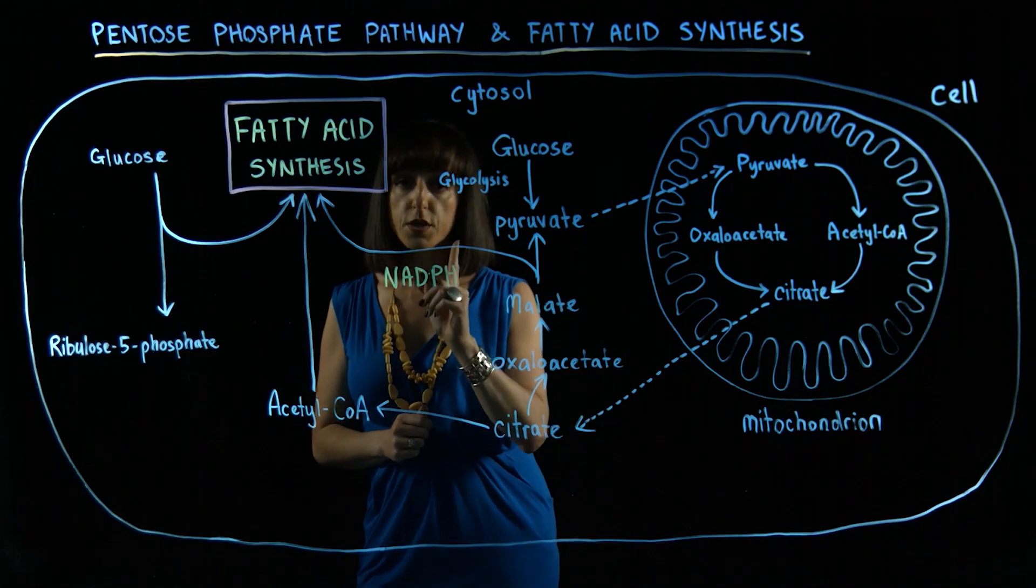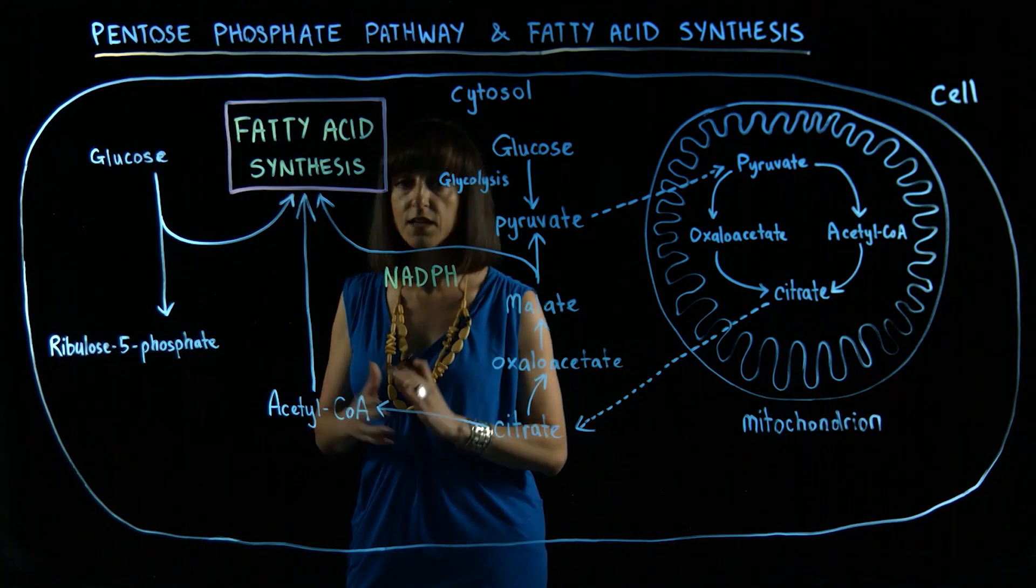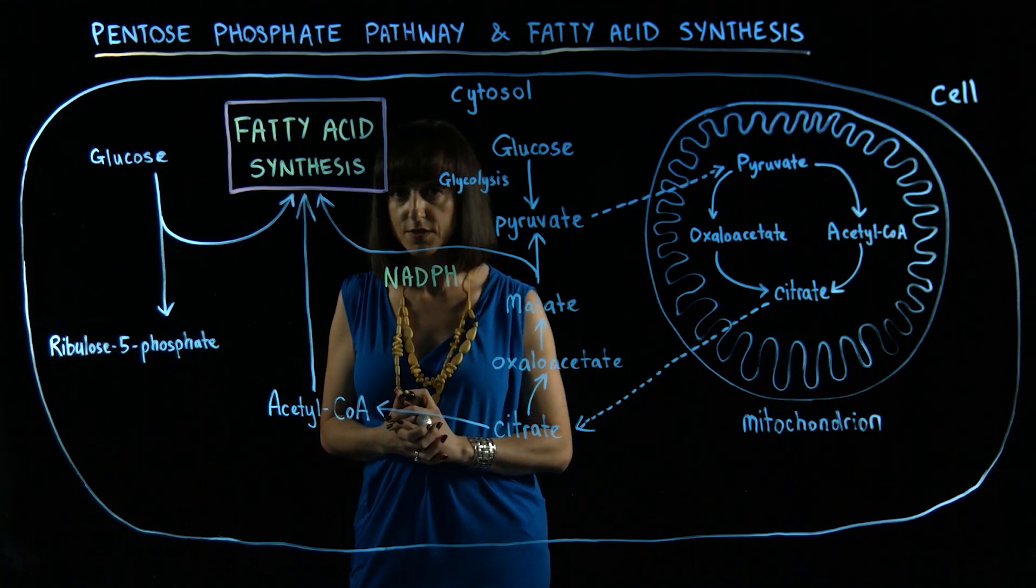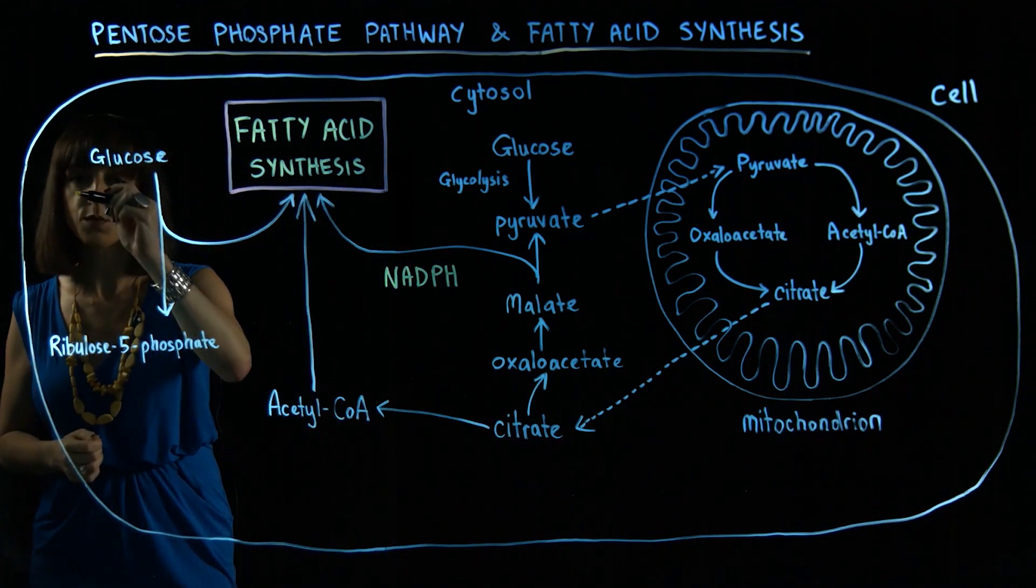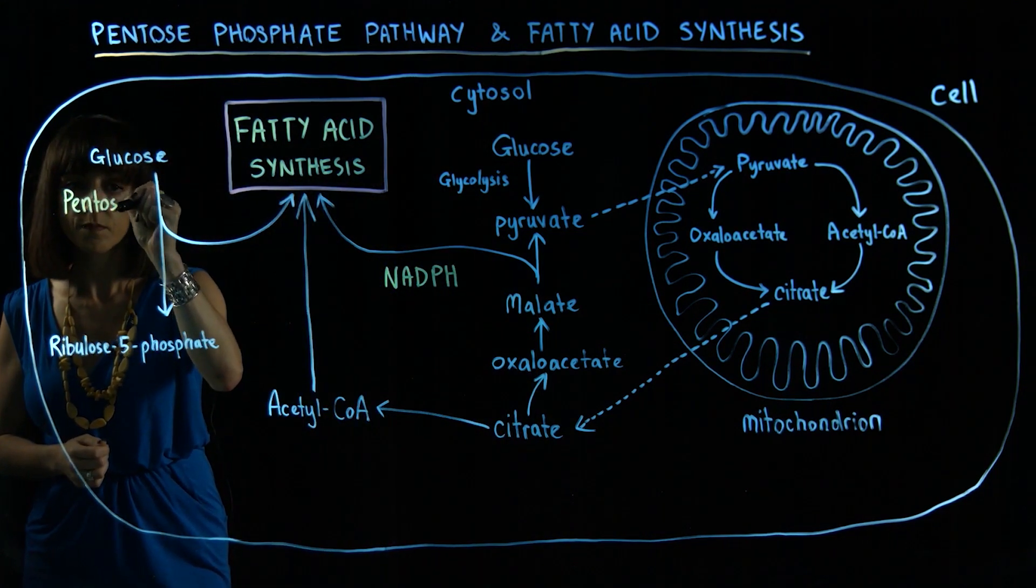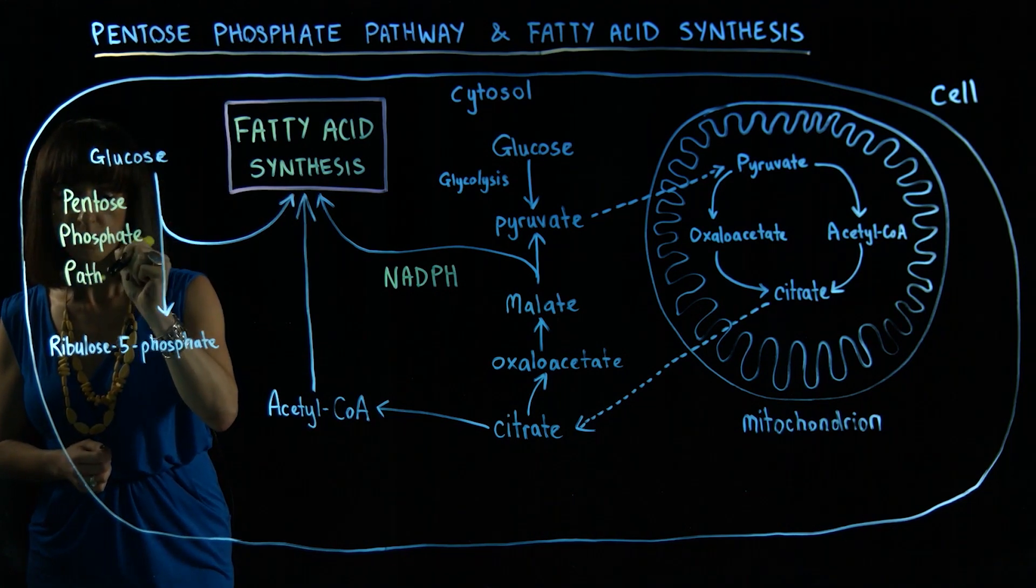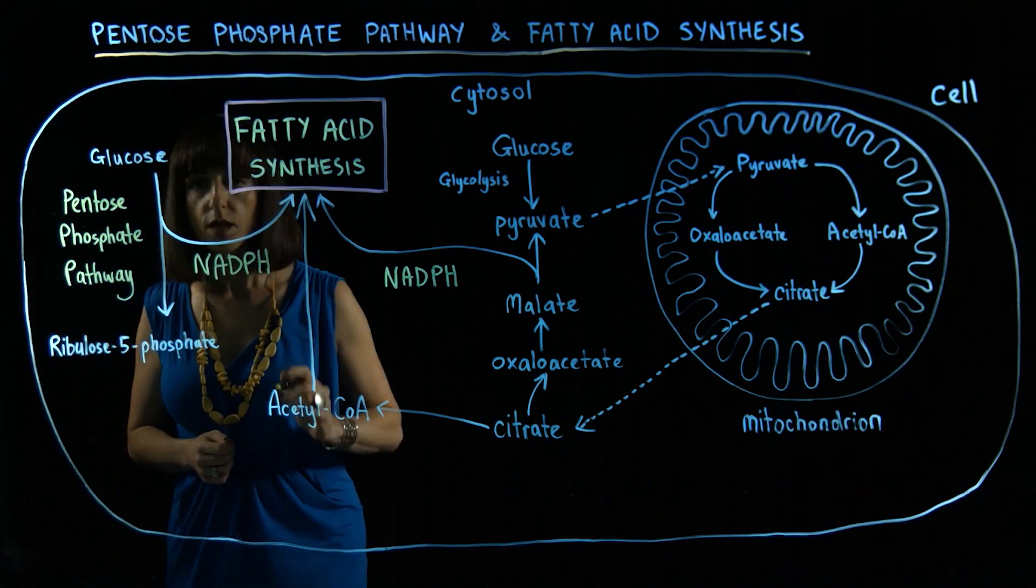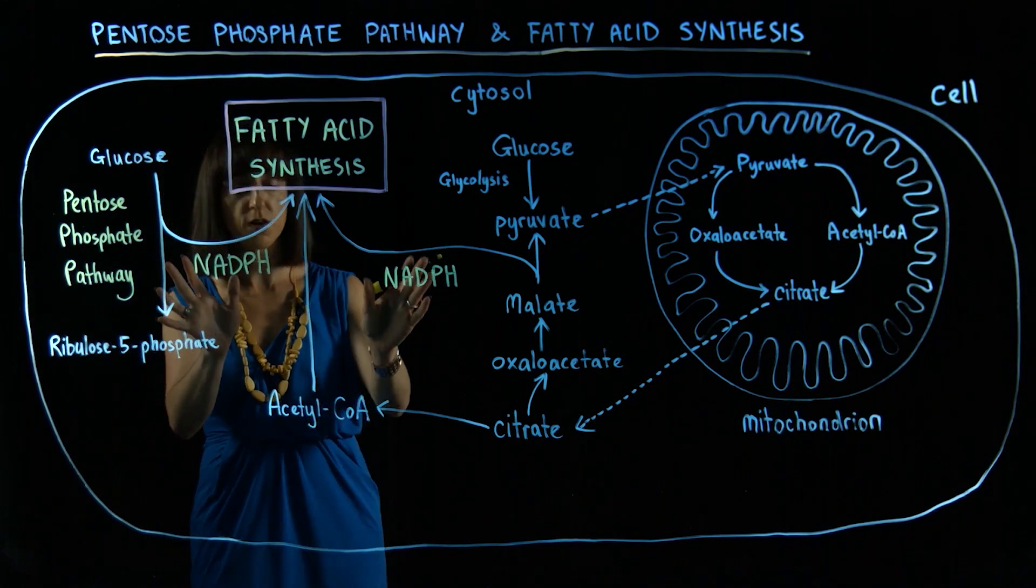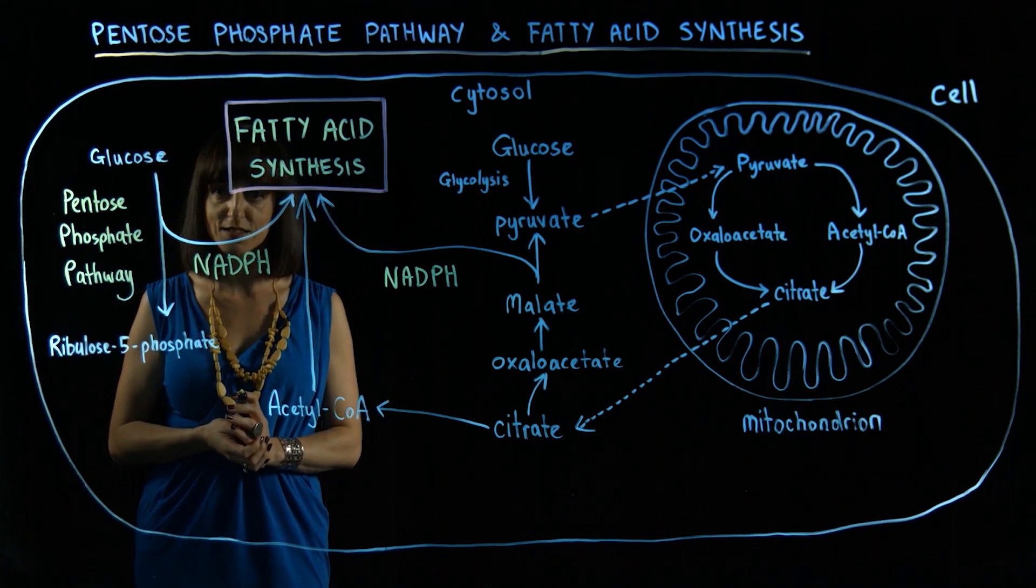And that reducing power can be used directly in fatty acid synthesis. But there's only one molecule that's produced per citrate that's passed into the cytosol, so the remaining reducing power must come from somewhere else. And that is from the pentose phosphate pathway. Together, those two sources of NADPH are required to fuel the overall biosynthetic process of fatty acid synthesis.